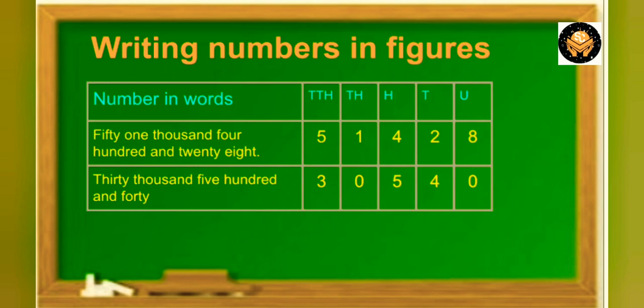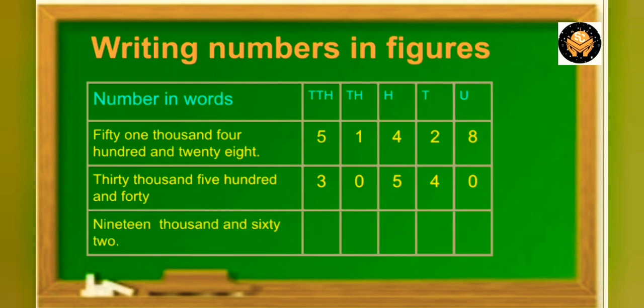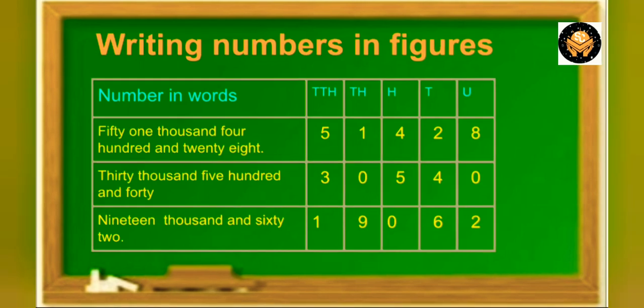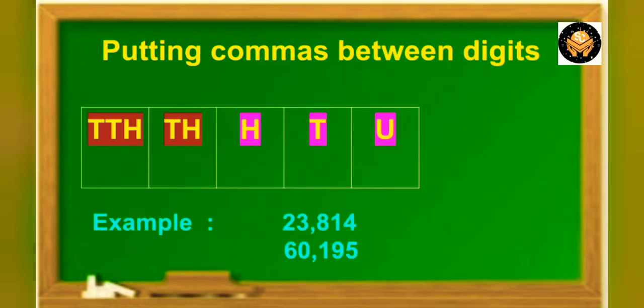Now let's take another example: 19,062. As there are 19,000, write 1 in the 10,000 place and 9 in the 1000 place. There are no 100s, so write 0 in the 100 place. 62 means 6 in the tens place and 2 in the unit place.